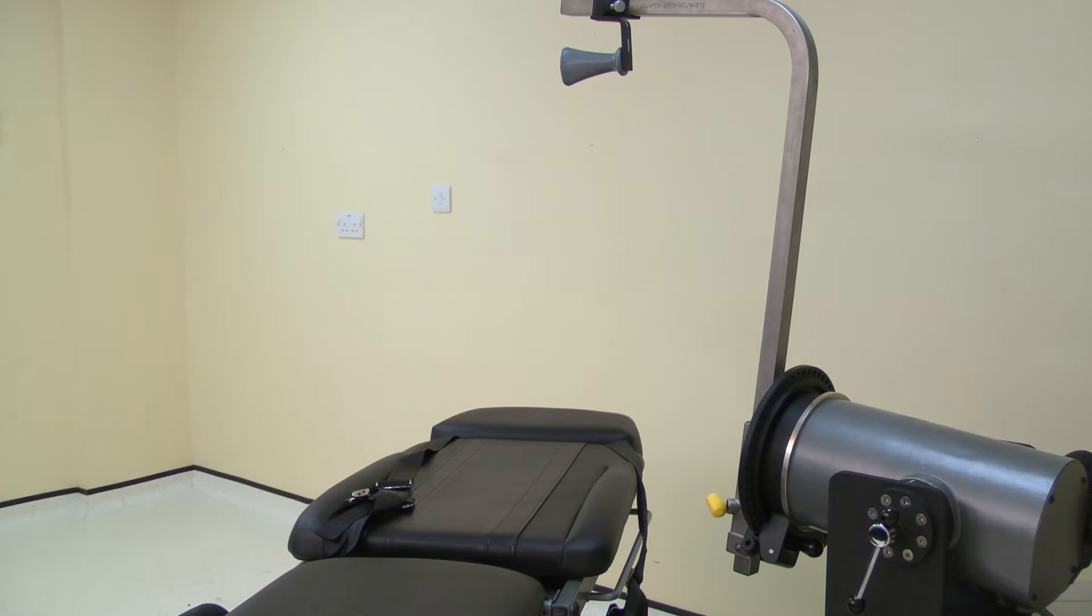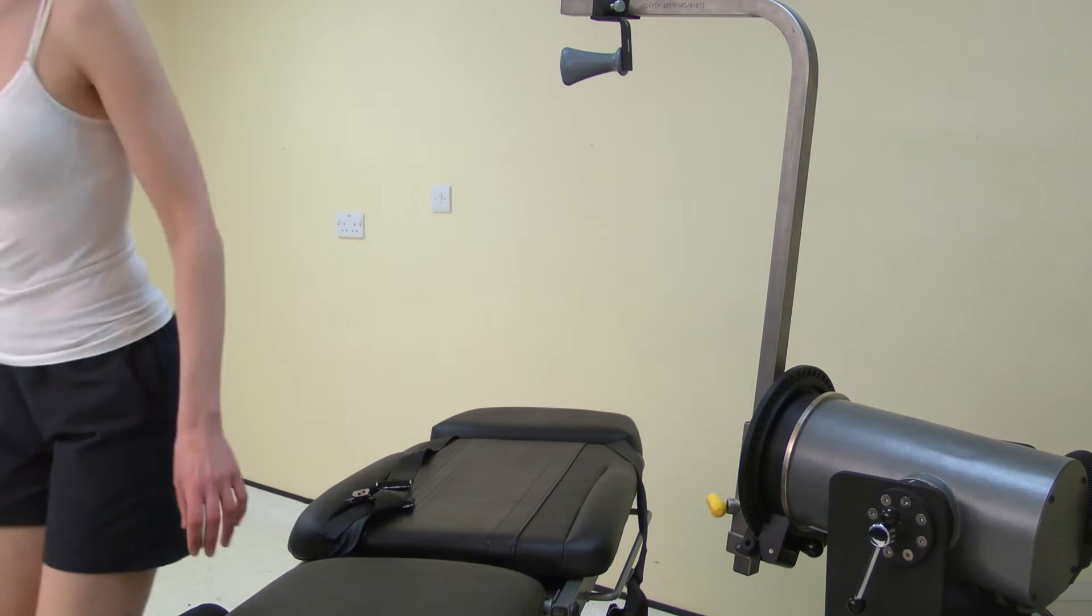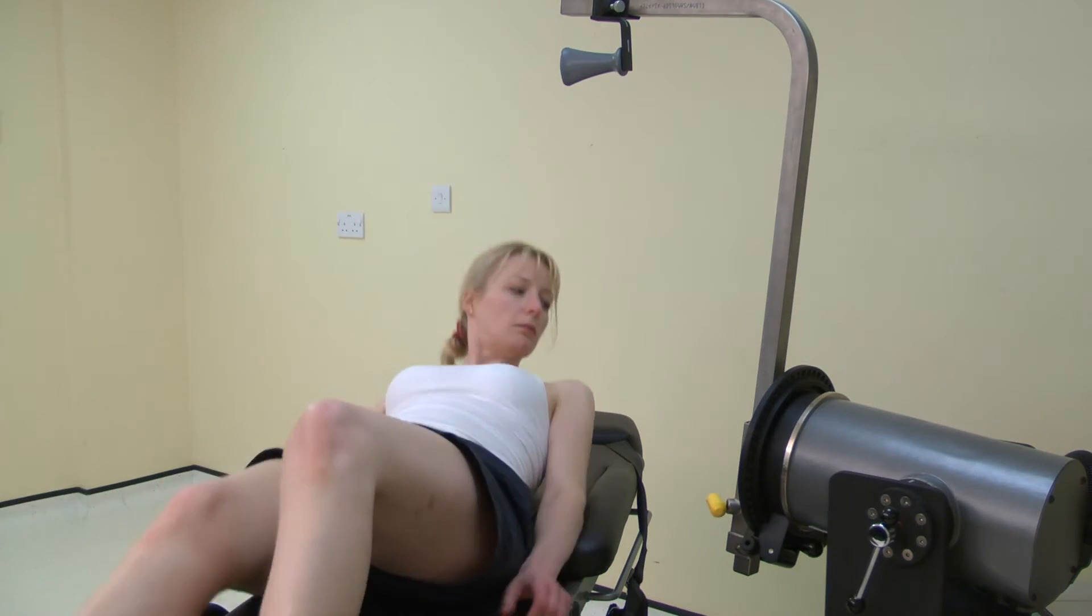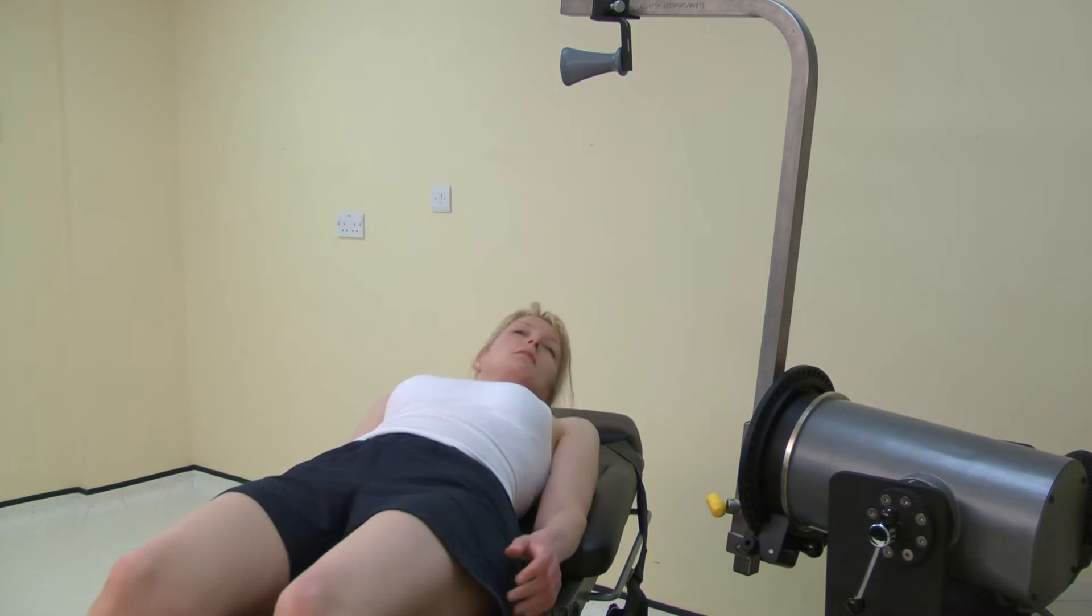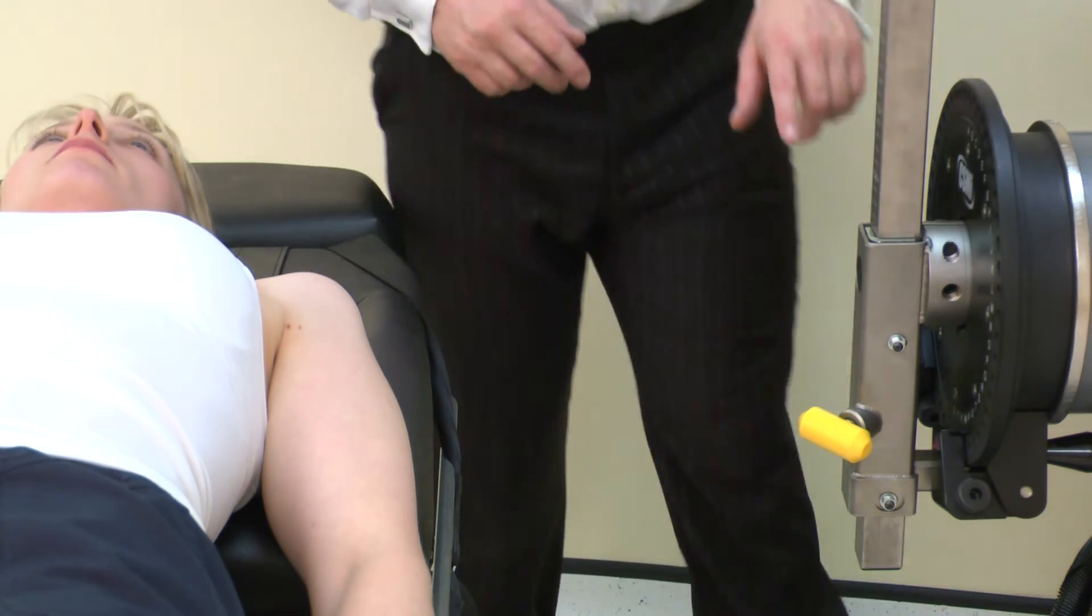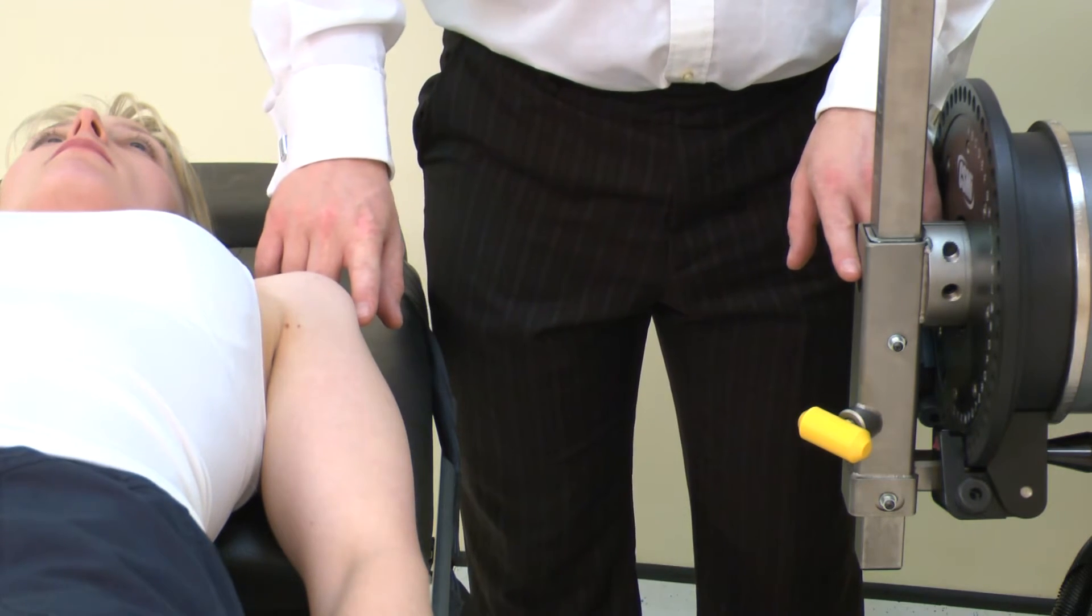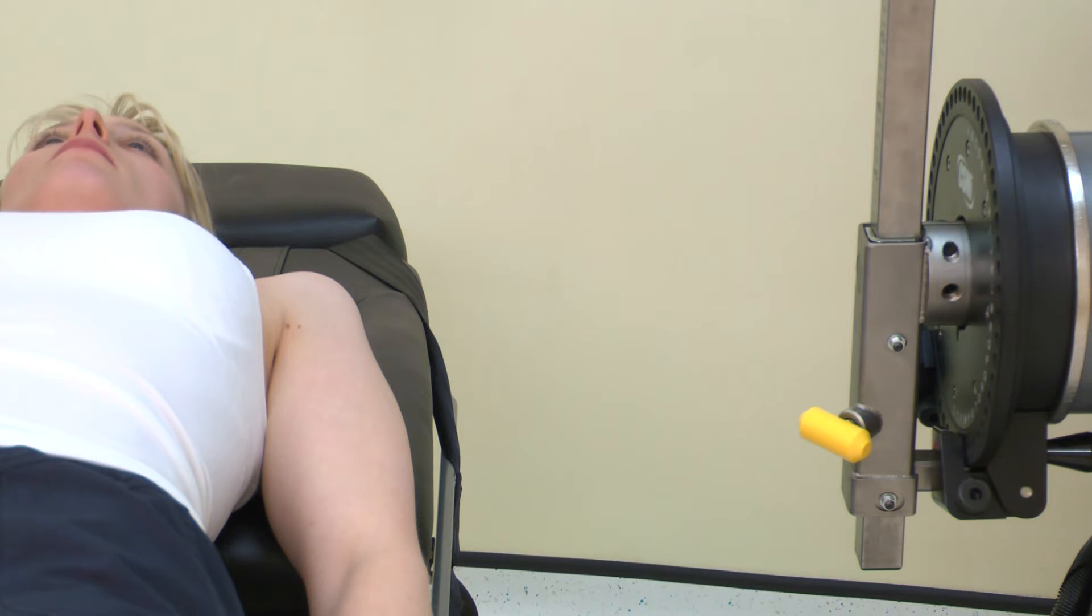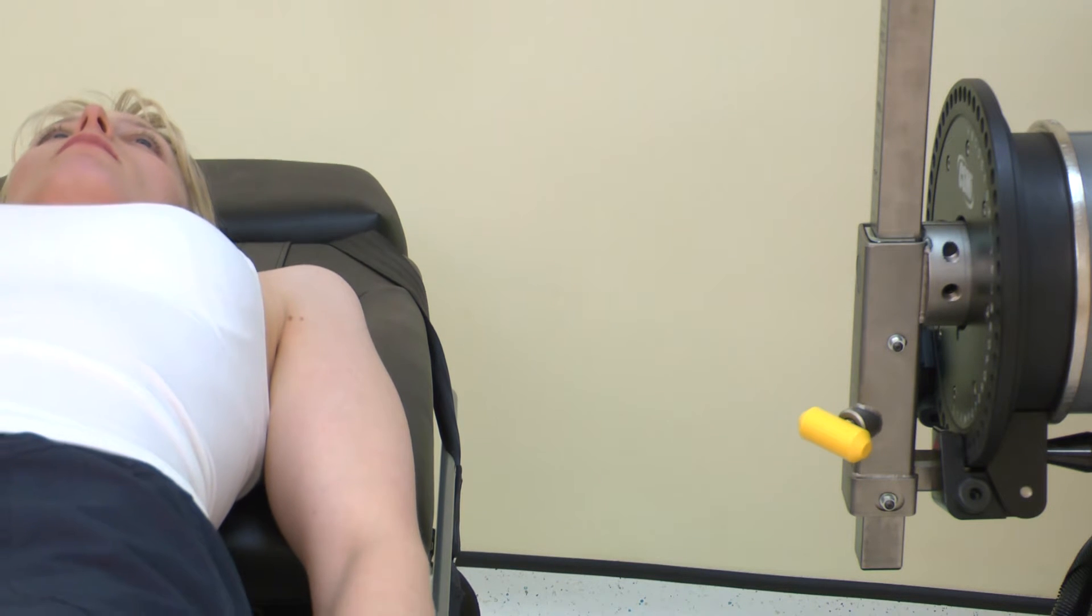Once the machine is positioned, ask the subject to lie on the chair. Now the axis of rotation needs to be set. The axis for the joint needs to be directly opposite the black dot on the input arm. The axis of rotation for the shoulder is opposite the acromion. The chair fore-aft and the dynamometer height may need adjustment to achieve the alignment.